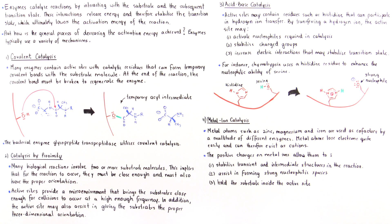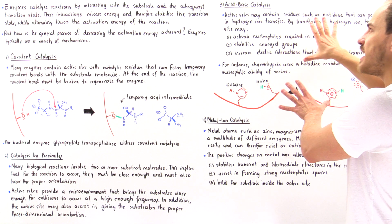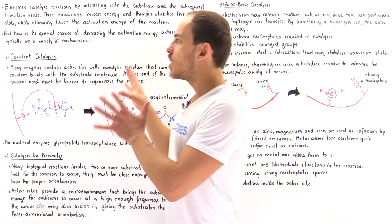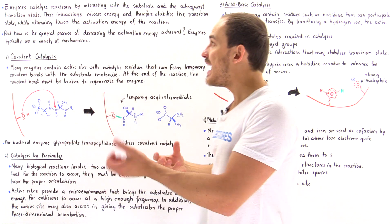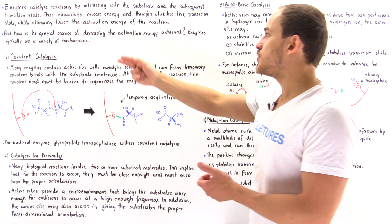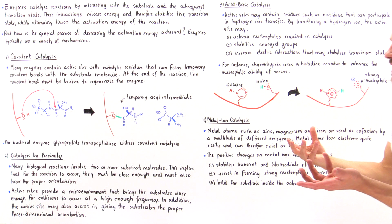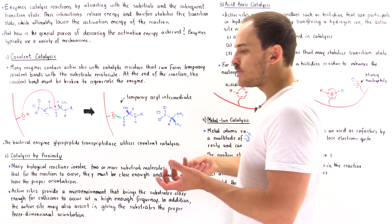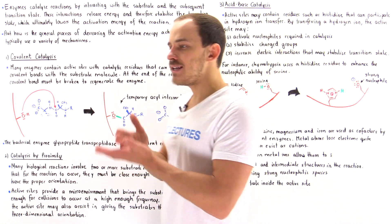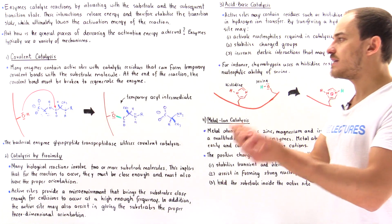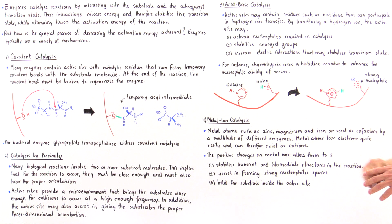As we'll see in the next several lectures, chymotrypsin uses not only acid-base catalysis, but it also uses covalent catalysis in decreasing the activation energy of that particular chemical reaction. What it participates in is breaking different types of peptide bonds — breaking different types of proteins that we ingest into our body.